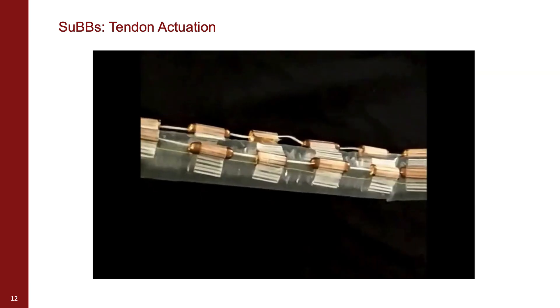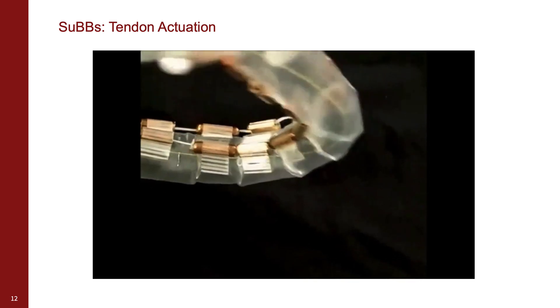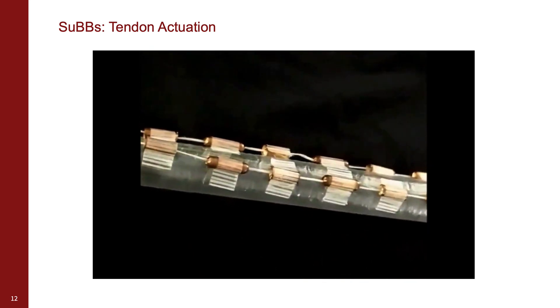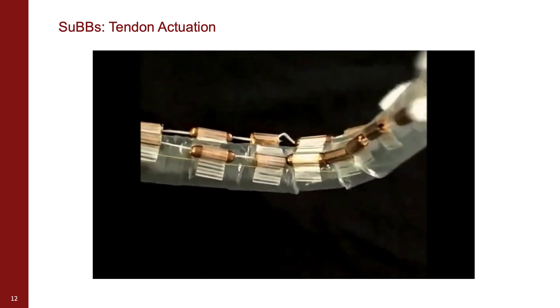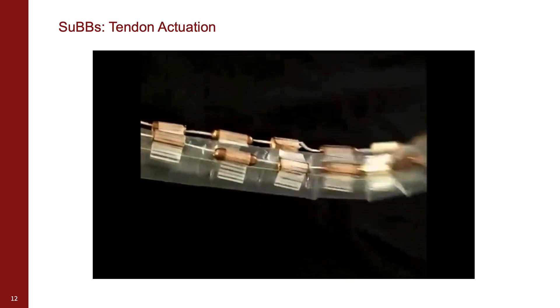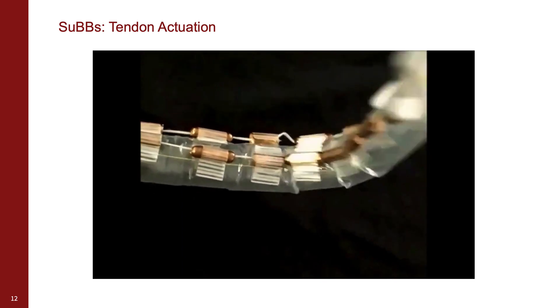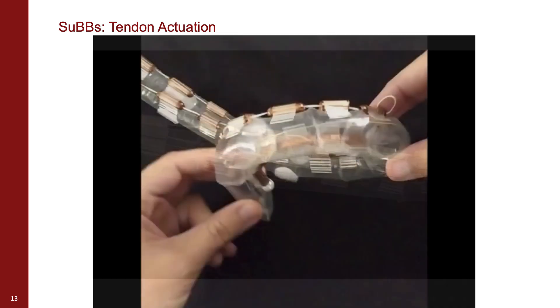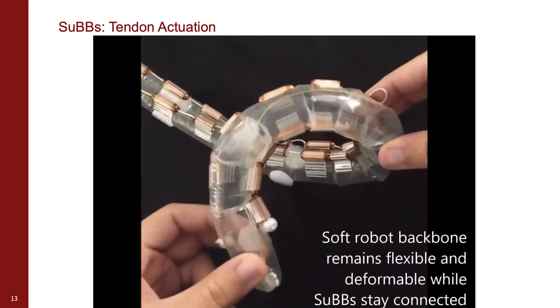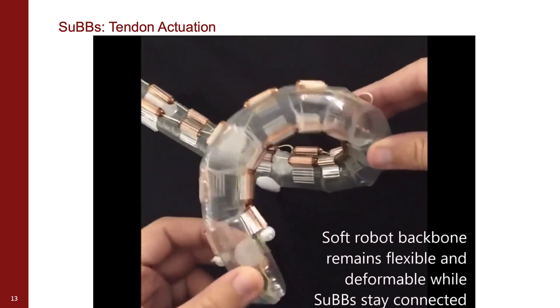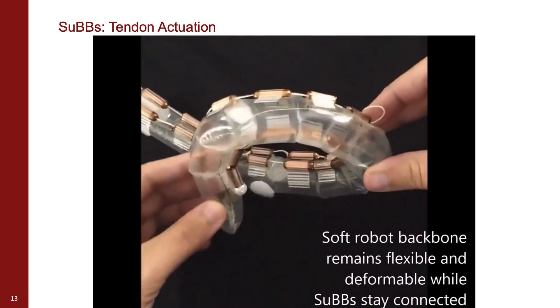When a tendon routed through the subs is pulled, this collapses the space between the subs and causes them to connect. This changes the shape of the soft robot as well, as you can see here where the tendon actuation causes the tube to bend up. When the tendons are fully pulled, the soft robot remains flexible in the directions orthogonal to the tendon, while still allowing the subs to stay connected.